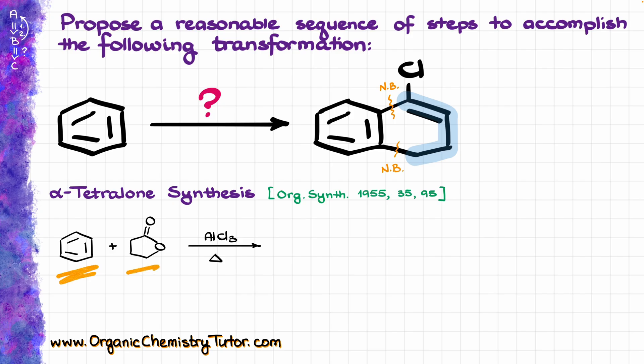reacting it with the gamma-butyrolactone, this species, in the presence of the Lewis catalyst, typically that's going to be aluminum chloride, and as a result we are going to get our tetralon. And the cool part about this reaction is that it gives us the product in just one synthetic step.